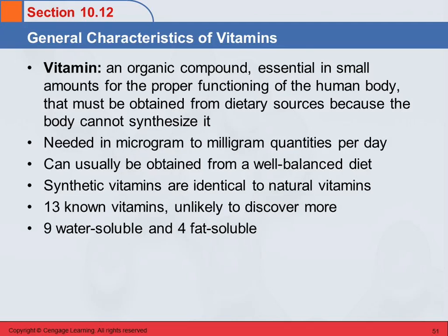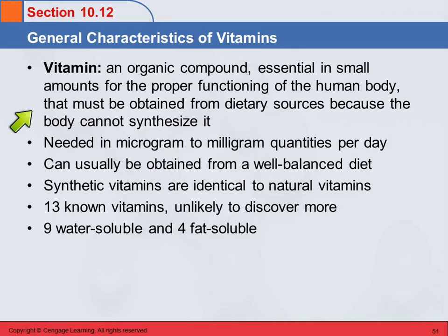How do we define a vitamin? A vitamin is an organic compound essential in small amounts for the proper functioning of the body. Generally, these have to be obtained from dietary sources because your body can't synthesize them.